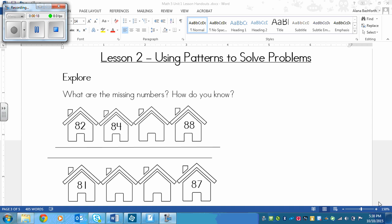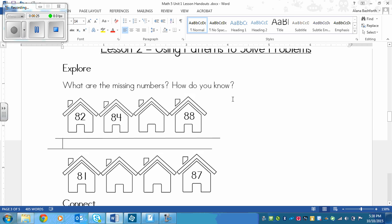Right now we are going to do the explore. What I'd like you to do after I read it is pause the video and see if you can figure out the pattern to solve the problem. It says, what are the missing numbers? How do you know? All of these houses are in the same problem. This is houses on one side of the street and this is houses on the other side of the street. So pause right now and then we'll go through it.